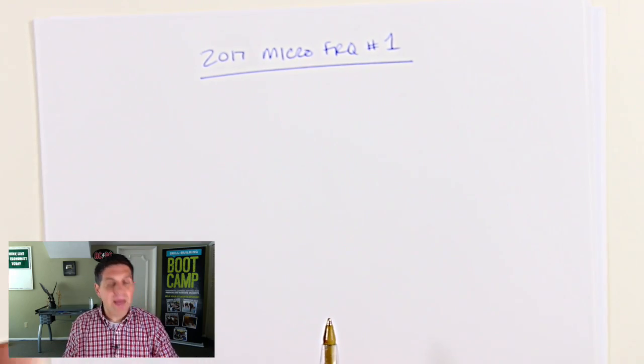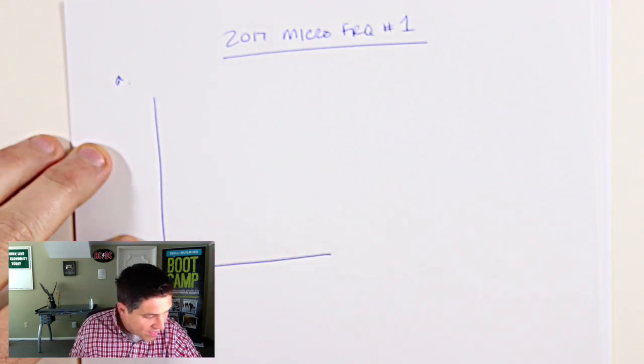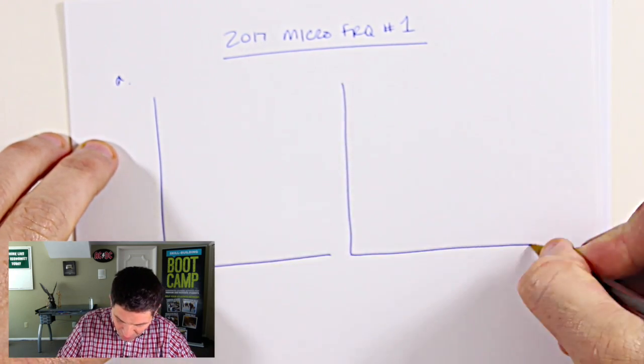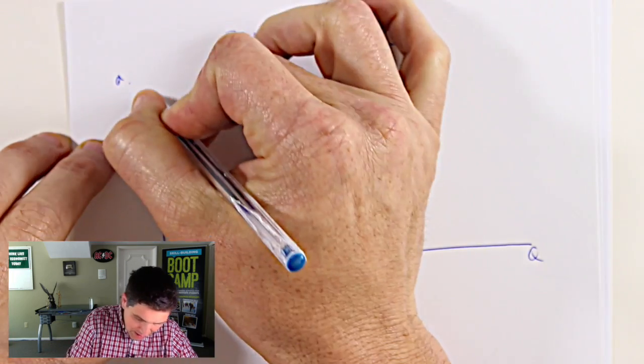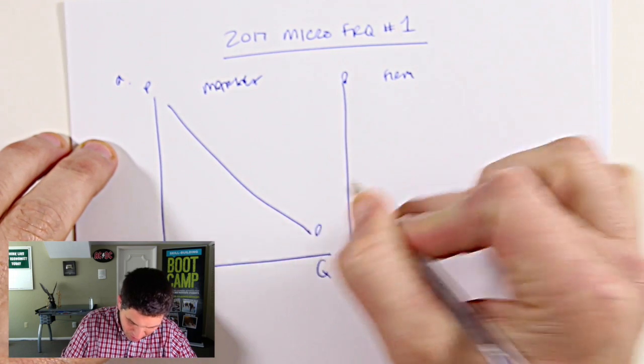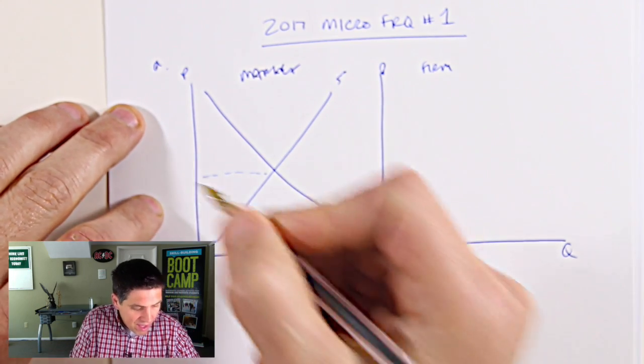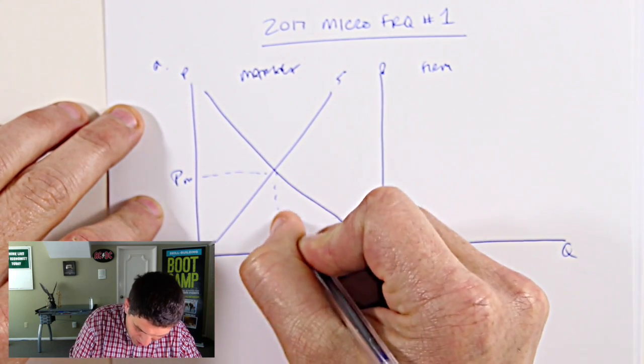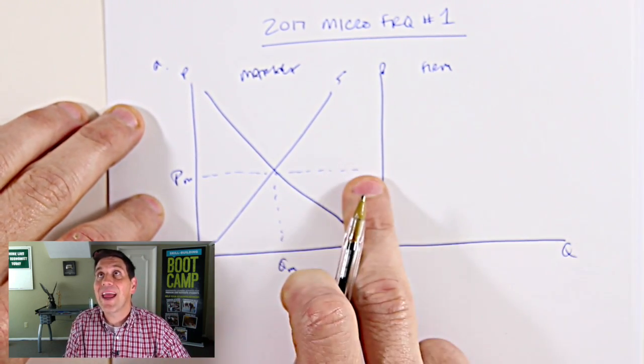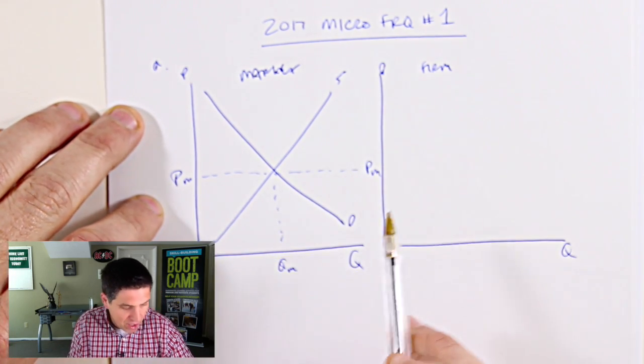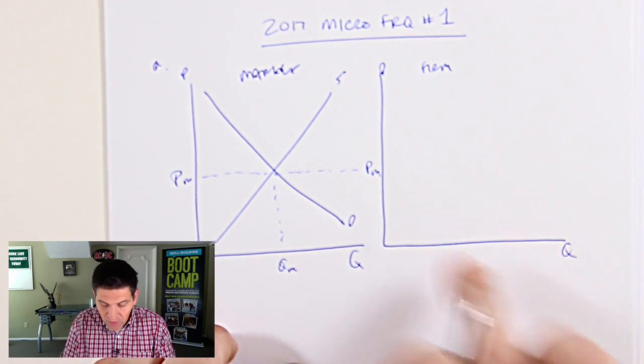It starts off by asking you to draw side-by-side graphs. Now, this is a question they ask a lot, side-by-side graphs for perfect competition. So in A, they said side-by-side graphs showing the market and the firm. Go and make sure you label those. We've got a market and a firm. We've got a price and a quantity, a price and a quantity market. Of course, you know a market graph, demand and supply. This time they're telling you explicitly to label it something. So on the AP test, they do this a lot. They're asking for price M for the price for the market and QM.